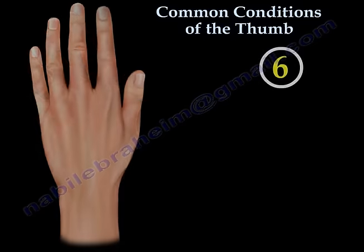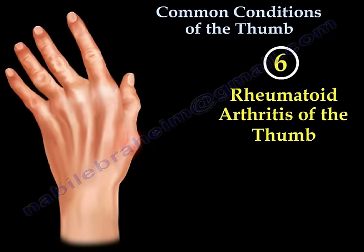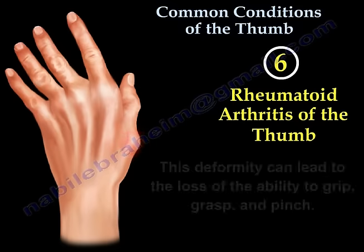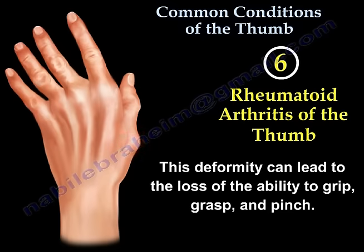Rheumatoid arthritis of the thumb causes inflammation and irritation, resulting in pain, swelling, weakness, and over time, loss of normal shape and alignment of the thumb joints. The deformity can lead to loss of the ability to grip, grasp, and pinch. The most common deformity is called the boutonniere deformity of the thumb.